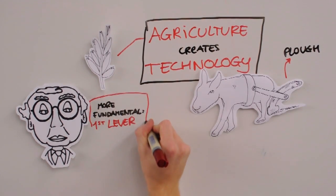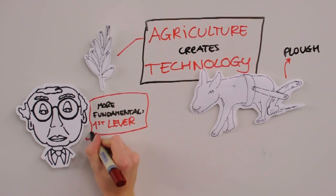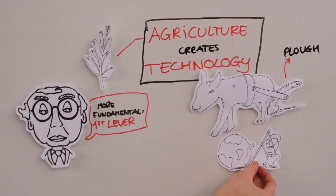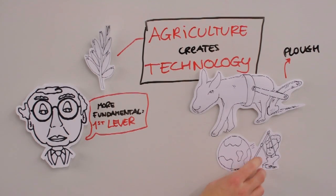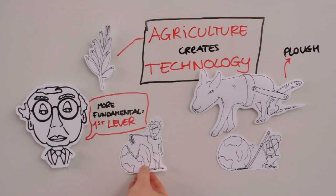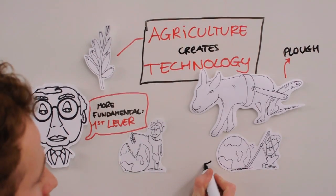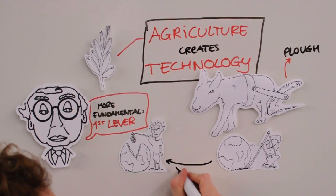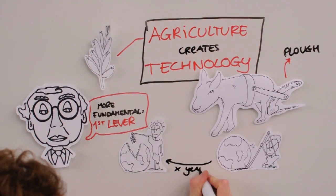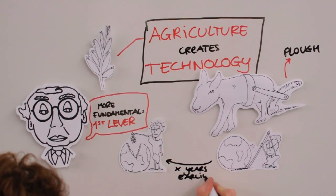When, long afterwards, Archimedes explained the theory of the lever to the Greeks, he said that with a lever he could move the earth. But thousands of years before that, the ploughman of the Middle East had been saying, give me a lever and I will feed the earth.